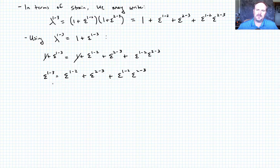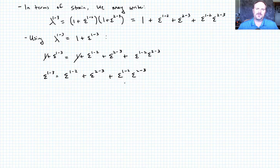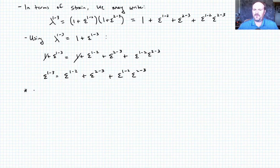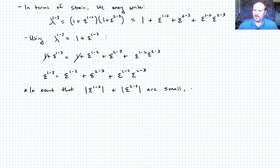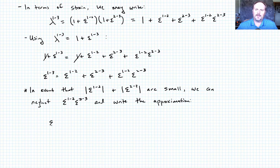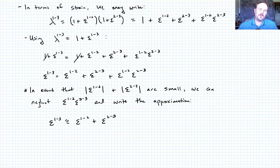So what this says is that, at least in its pure sense, we can't simply add strains. But if the strains are small such that this product term goes to zero or is negligible, then we could add them. In the event that the magnitudes of epsilon 1 to 2 and epsilon 2 to 3 are small, we can neglect the product and write the approximation that epsilon 1 to 3 is approximately equal to epsilon 1 to 2 plus epsilon 2 to 3. In that case, we can do what's called an additive decomposition — we can just add or superpose the strain states.